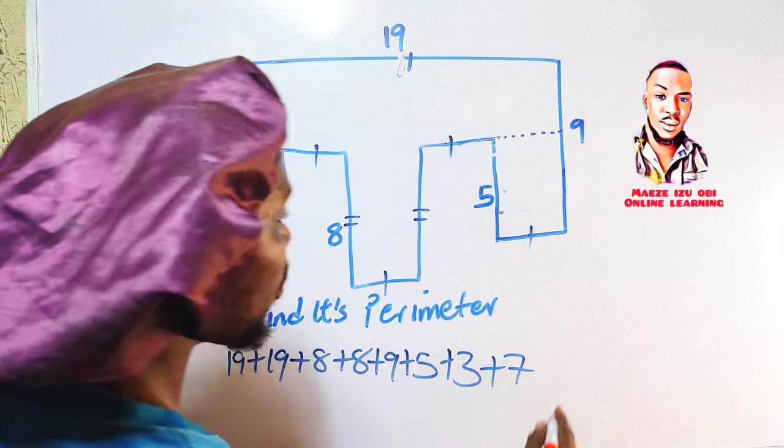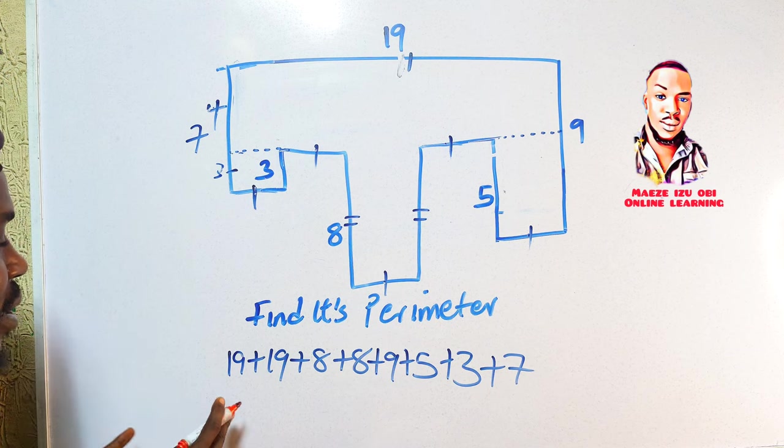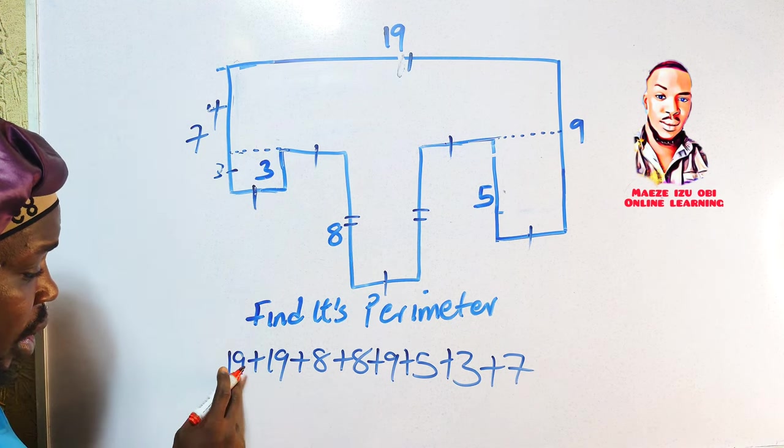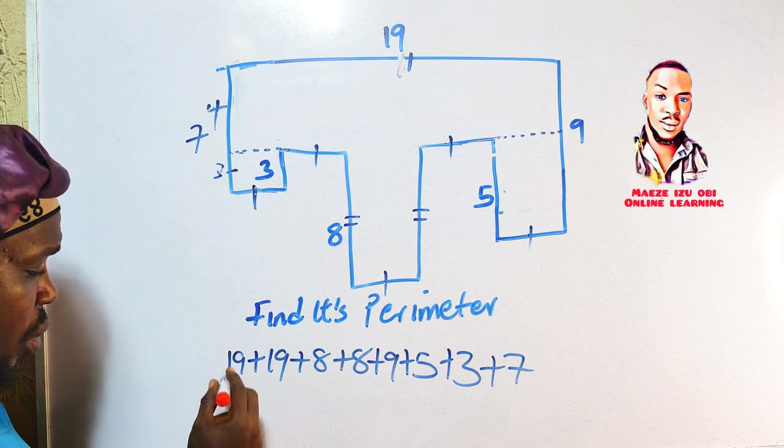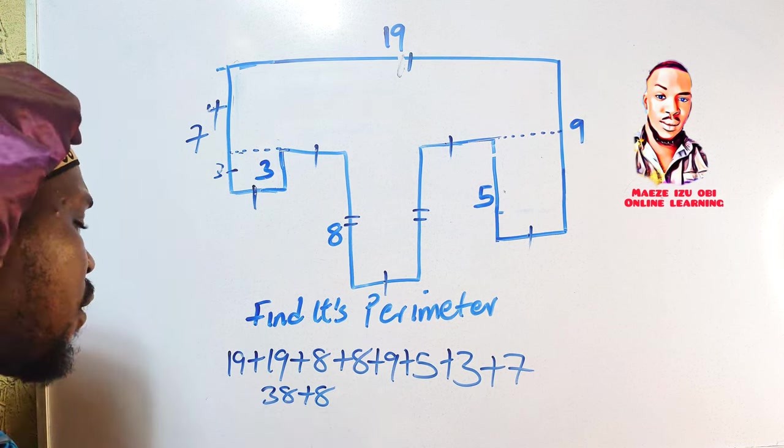Now we need to add all of them together to get our perfect answer. Now 19 plus 19 automatically gives us 38. 38 plus 8 gives us 46.